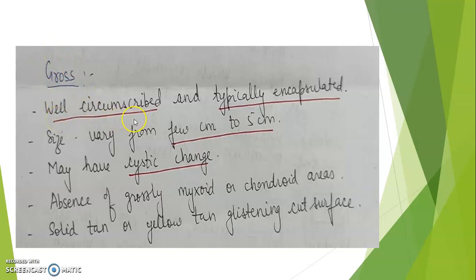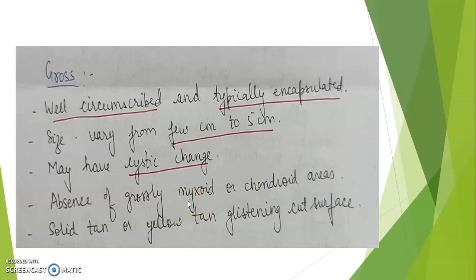Grossly, it is well circumscribed and typically encapsulated — an encapsulated neoplasm varying in size from a few centimeters up to 5 centimeters. It may have cystic changes. There is absence of grossly myxoid or chondroid areas, as those are common in pleomorphic adenomas.